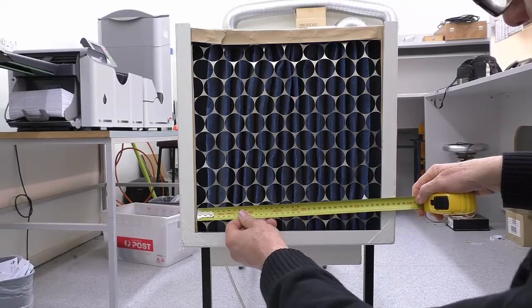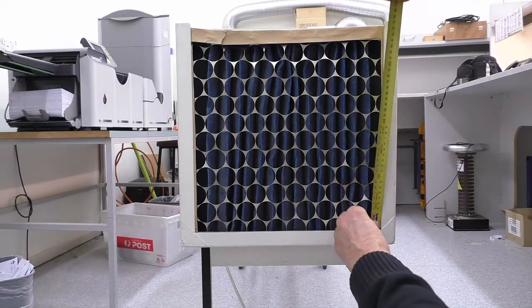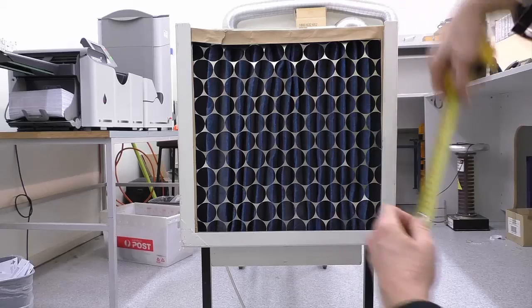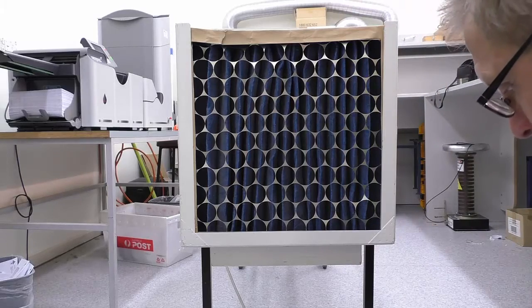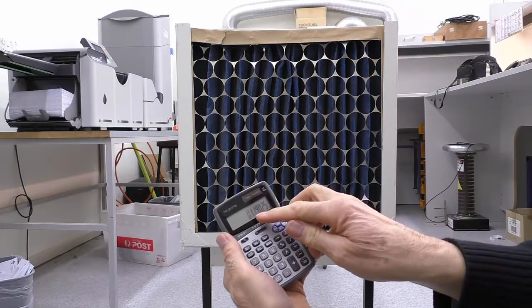Now if we put the tape across here, we see it's 345 by 345, and that works out if we use the calculator. That works out to 1190.